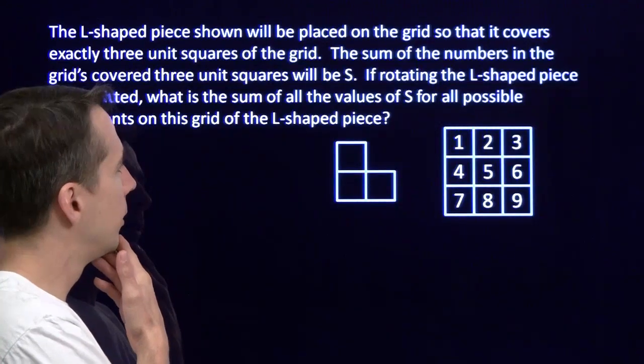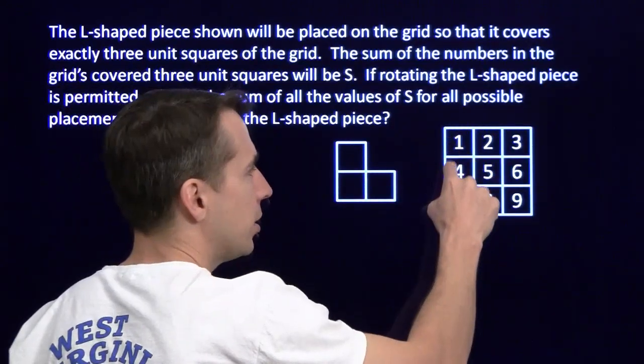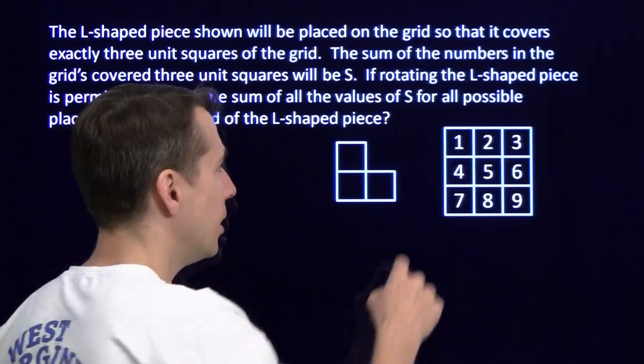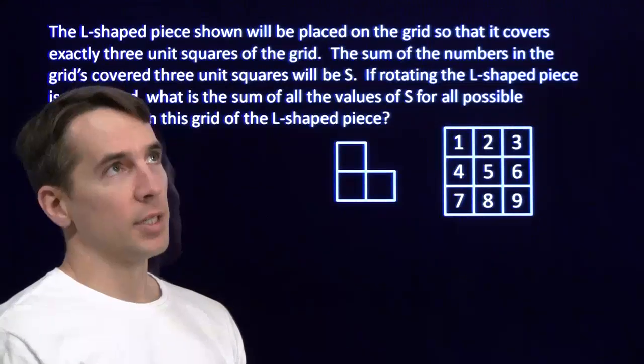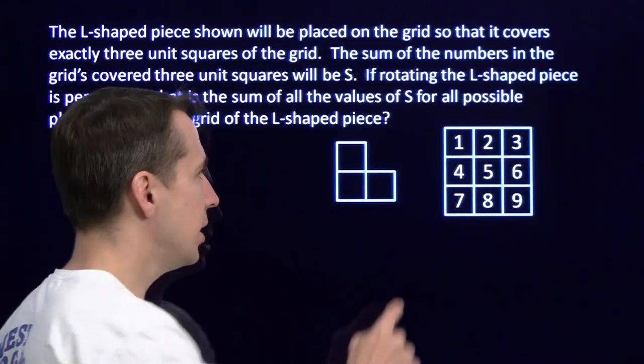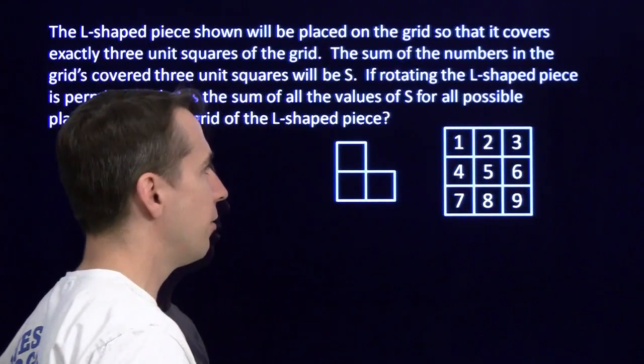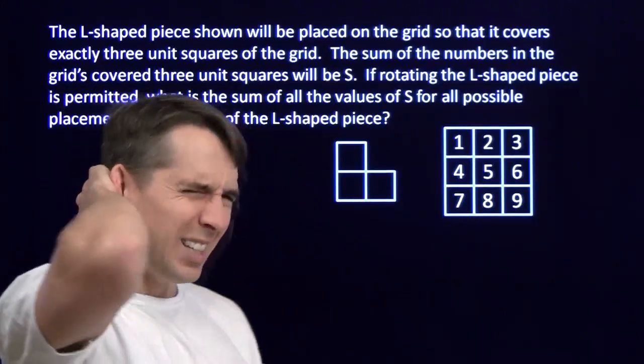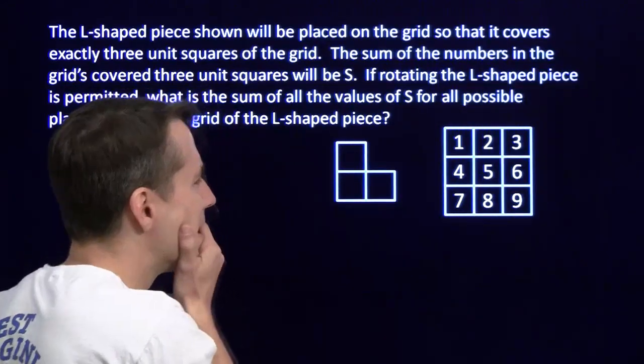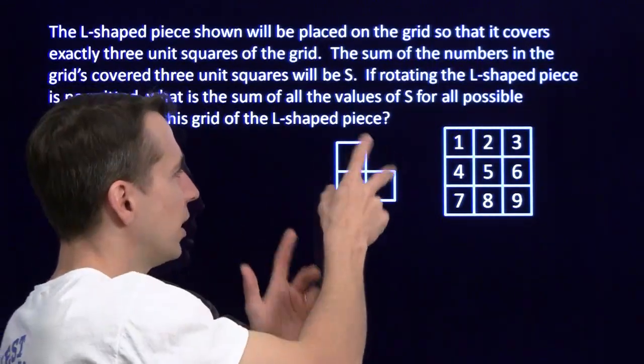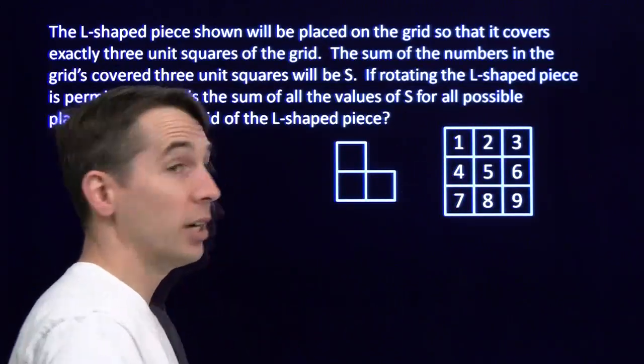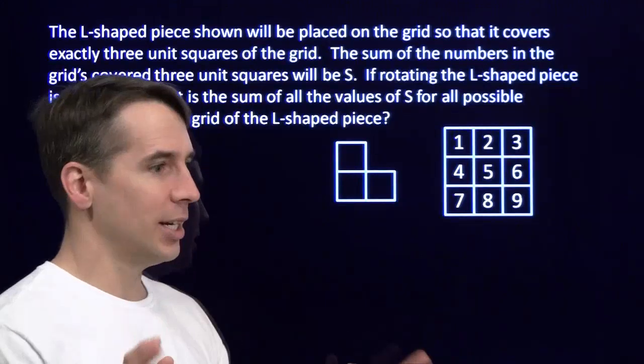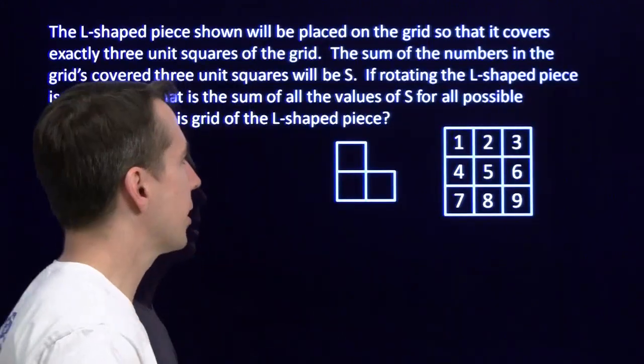That sounds hard. We could start with the L piece here covering the 1, 4, and 5. That gives us 1 plus 4 plus 5, that's 10. I could cover the 2, the 1, and the 4. That's 7 more. 10 plus 7 is 17. I can cover the 1, the 2, and the 5. That's 8 more, 8 and 17 is 25. That's a bad way to do the problem. I might not get all the ways to put the L-shaped piece on there, and I'm going to have to add three digits a bunch of different times. And I know what the chance is that I'm going to get all those right. No, that's not going to happen.